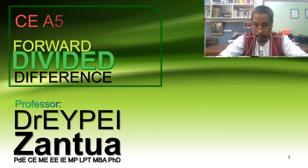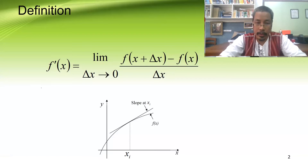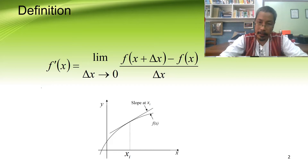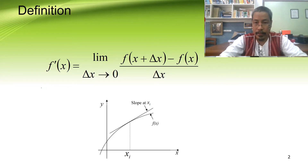Let us get the experience we need so that later on we have an insight. Let us proceed — again, let us start with the definition of the first derivative. It is defined as: the first derivative of a function is the function of x plus delta x, minus the function of x, divided by delta x, but then we have to take the limit of that as delta x approaches zero.